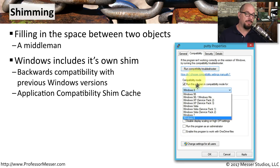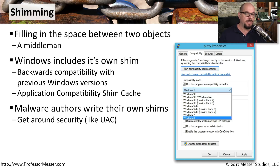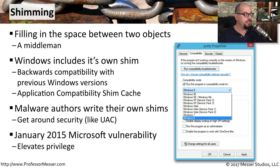In Windows, this is called compatibility mode. Developers refer to this as the application compatibility shim cache. If a malware author could write their own shim to pretend as if it was a previous version of Windows, they may be able to get around a number of security requirements. For example, older versions of Windows didn't have the user account control feature, and if you could pretend that the application was using an older version of Windows, you may be able to circumvent some of those newer security techniques. This actually happened in January of 2015 — a vulnerability was identified in the shim cache where someone could elevate privilege just by taking advantage of this vulnerability.